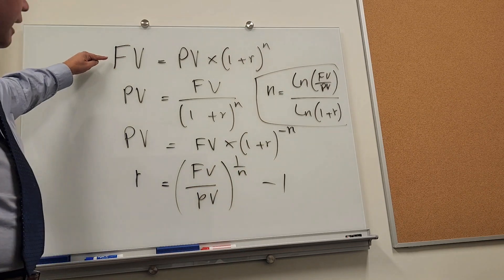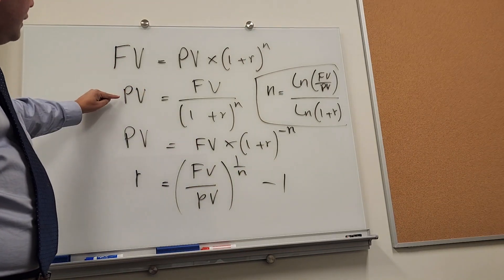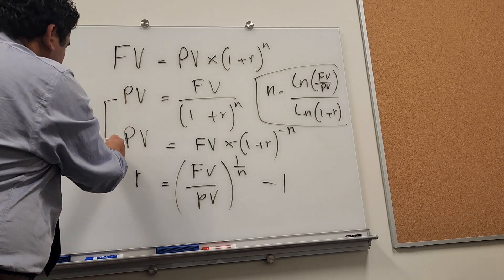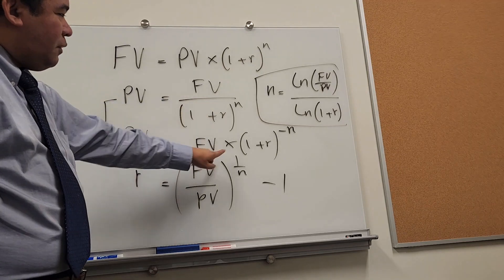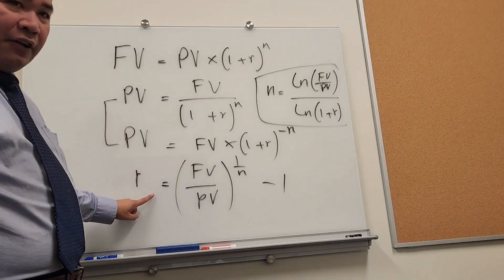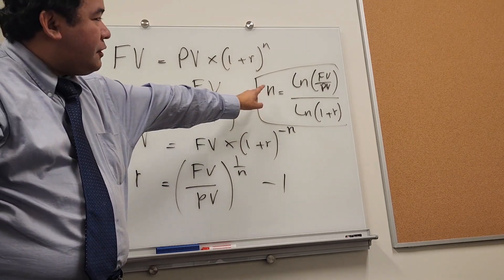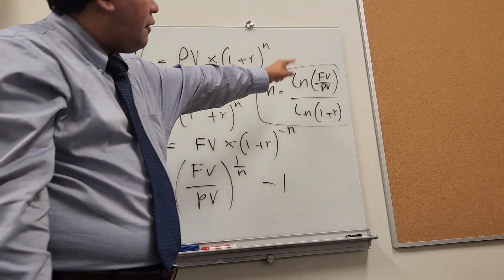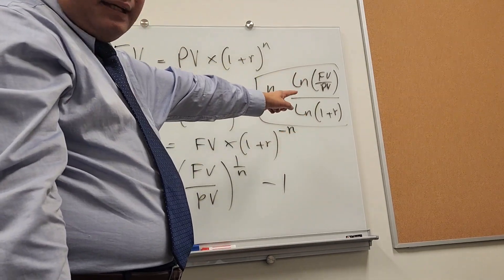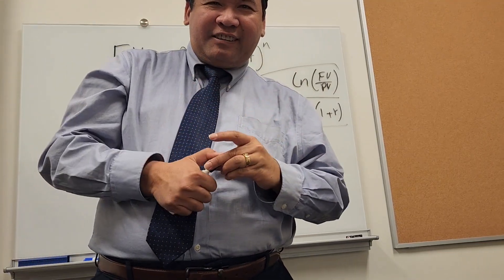To recap: the first method is for future value, and there are two methods for present value — one is fractions and one is multiplication. You can rearrange the equation to find r, and you can also find the number of periods using the natural log of future value over present value, divided by the natural log of 1 plus r. Hope you all have a wonderful day. Take care.